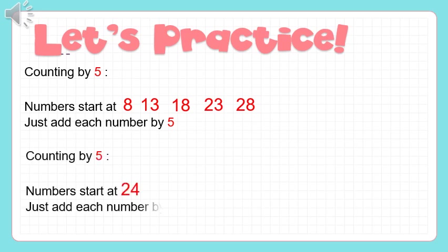Counting up by five, starting from the number twenty-four. We are just going to add each number by five. Twenty-four plus five is twenty-nine, twenty-nine plus five is thirty-four, thirty-four plus five is thirty-nine, and thirty-nine plus five is forty-four. So counting by five starting from twenty-four gives: twenty-four, twenty-nine, thirty-four, thirty-nine, and forty-four.